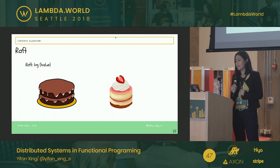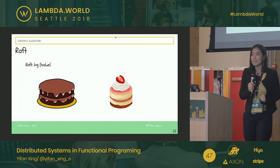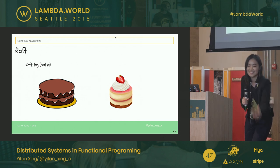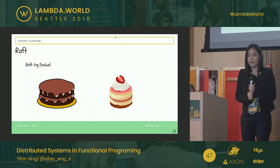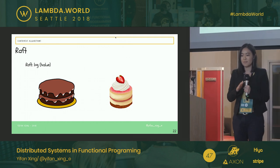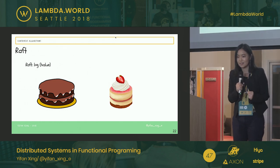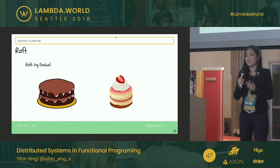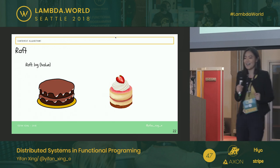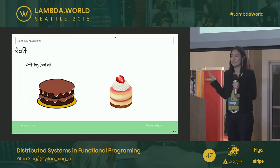Different from Paxos, Raft works around logs. Let's talk about cakes again — we as a group trust Kate, so Kate is the best person to pick a cake flavor. Kate said chocolate, so we're going to buy chocolate. As a leader, we will just act as followers and listen to whatever she says. And that is Raft.